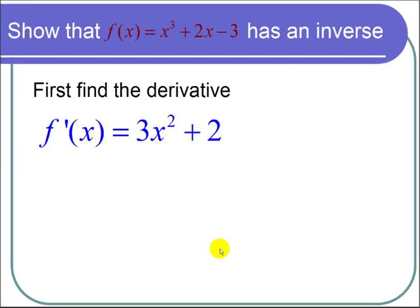Our strategy is to show that the function is monotonic, and then we'll invoke a theorem that says monotonic functions have inverses.